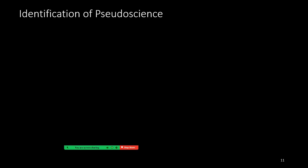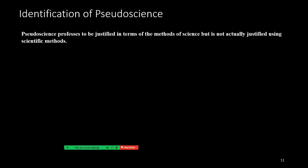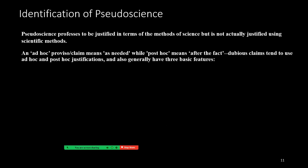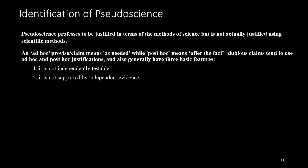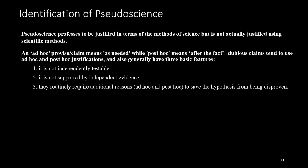Let's move on to pseudoscience. Pseudoscience professes to be justified in terms of the methods of science, but is not actually justified using scientific methods. An ad hoc proviso claim means 'as needed,' while post hoc means 'after the fact.' Dubious claims tend to use both ad hoc and post hoc justifications, and generally have three basic features: it is not independently testable, it is not supported by independent evidence, and pseudoscience routinely requires additional reasons — ad hoc and post hoc — to save the hypothesis from being disproven.